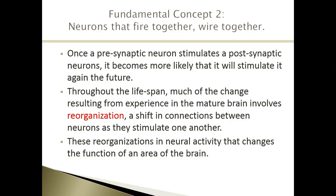As we move through different topics, look for examples of this fundamental concept — specifically, what neurotransmitter is being used in what part of the brain and how it works. Examples of this fundamental concept will almost always involve neurotransmitter secretion across different parts of the brain.